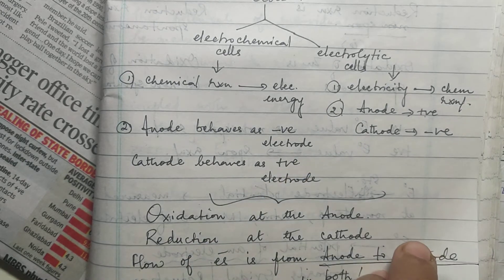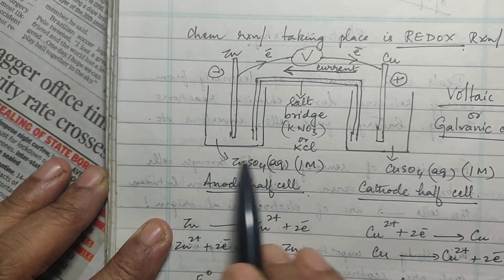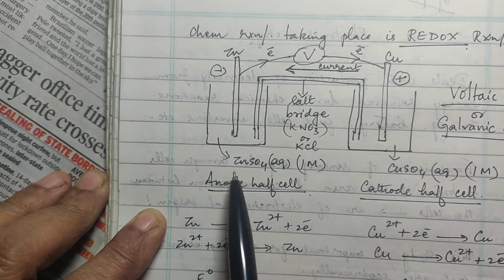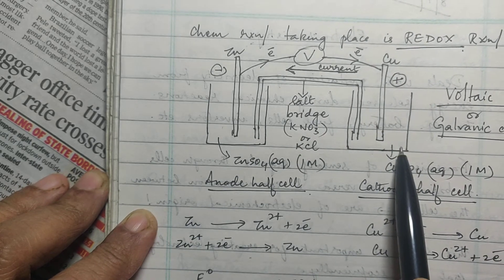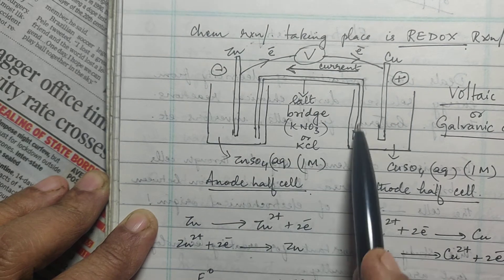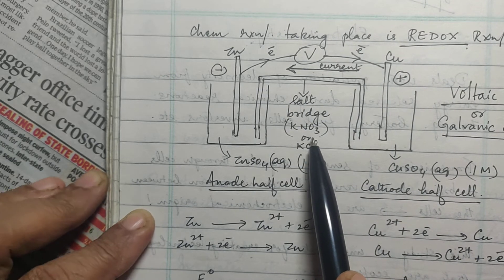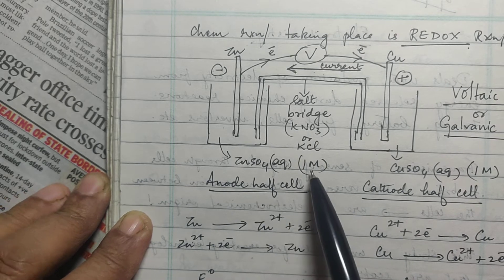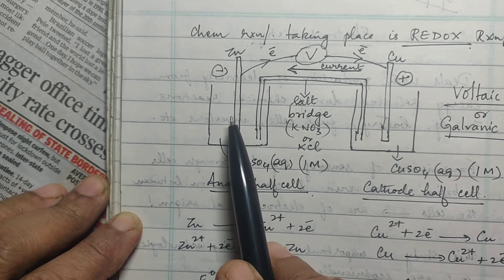In an electrochemical cell, you have an anode placed inside an aqueous solution of the given salt. Here, a zinc rod is placed in zinc sulfate solution, and on the cathode side, a copper rod is placed in copper sulfate solution. There is a salt bridge connecting the two half cells, which is generally made of a filter paper rolled and dipped into a saturated solution of potassium nitrate or potassium chloride, with its ends dipped into both half cells.